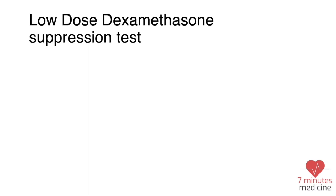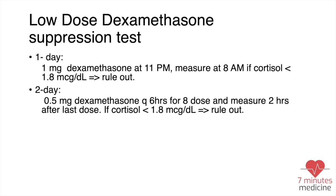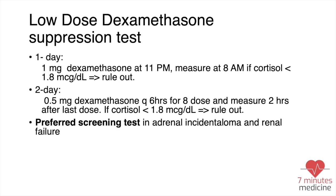The first screening test is the low-dose dexamethasone suppression test. The one-day test: give 1 mg of dexamethasone at 11 p.m., then measure cortisol at 8 a.m. If it is suppressed to less than 1.8 micrograms per deciliter, this rules out Cushing syndrome. The two-day test: give 0.5 mg dexamethasone every 6 hours for eight doses and measure cortisol two hours after the last dose; if less than 1.8 micrograms per deciliter, it rules out Cushing syndrome.